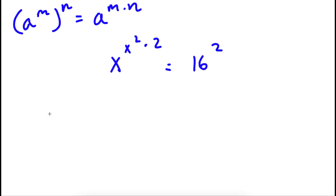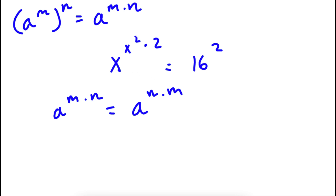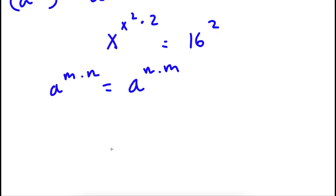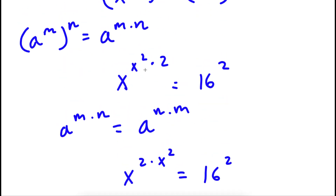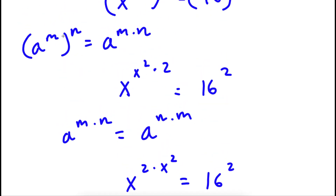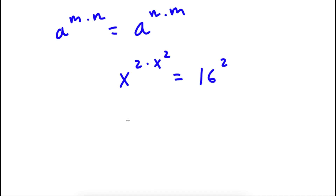Now, if I have something in the form a to the power of m times n, this can also be written as a to the power of n times m, because m and n are interchangeable — you can switch these two. So I'm going to rewrite x to the power of x squared times 2 as x to the power of 2 times x squared. And using the power rule again, I can rewrite this as x squared to the power of x squared.